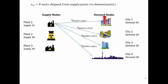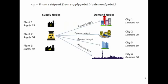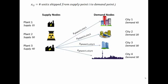For plant one alone there's four decision variables. We need to figure out how much we're sending from plant one to city one, how much we're sending from plant one to city two, etc. For plant two there's an additional four decision variables — how much we're sending from plant two to city one, plant two to city two, plant two to city three, and plant two to city four. And then finally for plant three we have an additional four variables which are doing a similar thing.